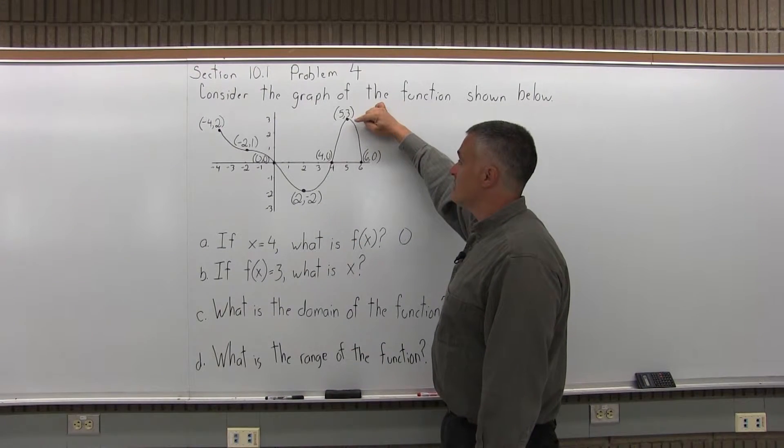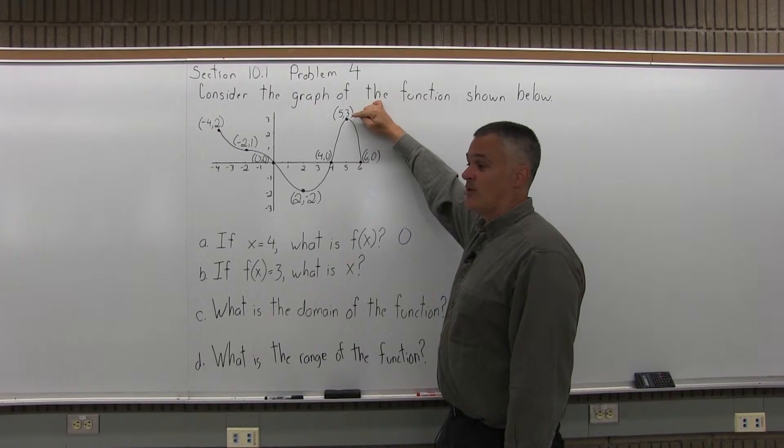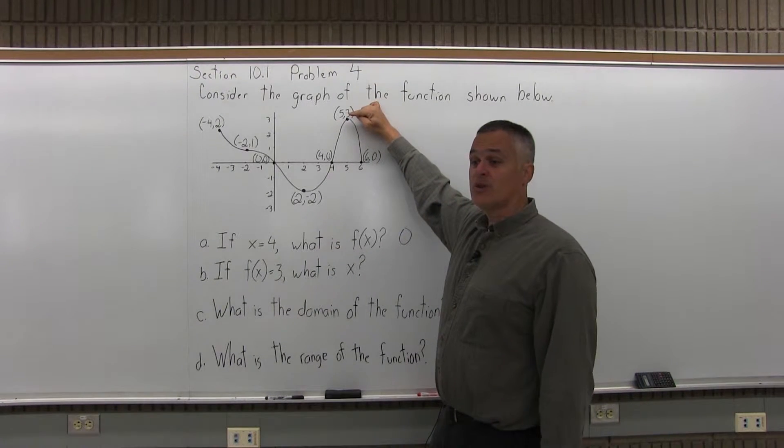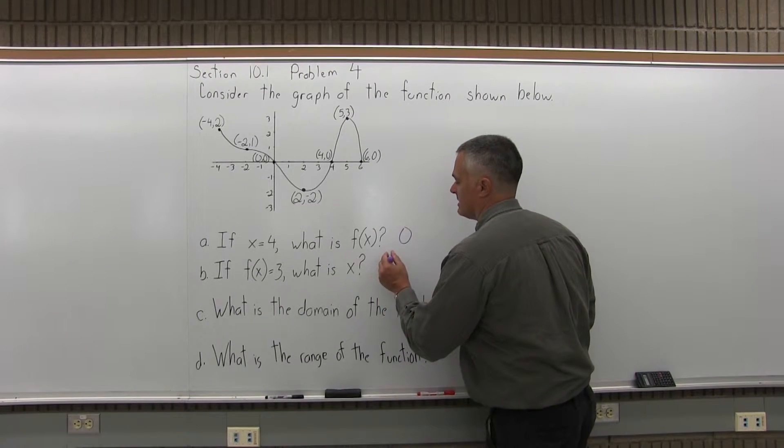you will eventually see that there is a point on the graph labeled that has a y-coordinate, or f of x-coordinate, of 3. So the x-coordinate that goes with that is 5. So the answer to part B is 5.